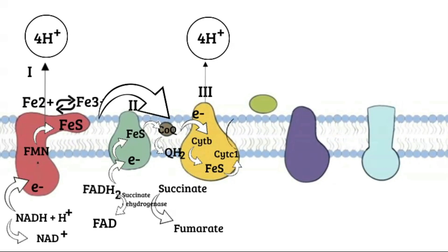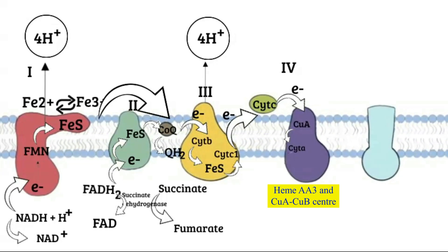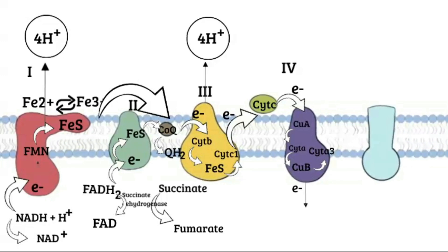From cytochrome c1, the electrons are transported to cytochrome c, which is an intermediate protein used to transfer electrons to Complex IV. Complex IV is also called cytochrome oxidase and consists of cytochrome a, cytochrome a3, copper a, and copper b — referred to as the heme a/a3 and copper a/copper b centers. The electron is accepted by copper a, donated to cytochrome a, transferred to copper b, and then to cytochrome a3. At Complex IV, oxygen is the final acceptor of electrons, accepting them from cytochrome a3 to form a water molecule. These redox reactions cause pumping of two protons into the intermembrane space.